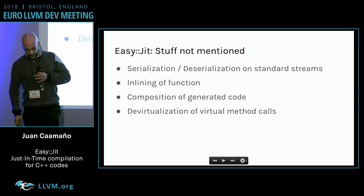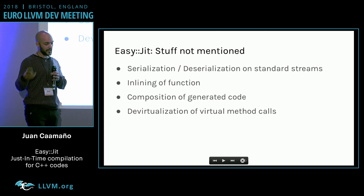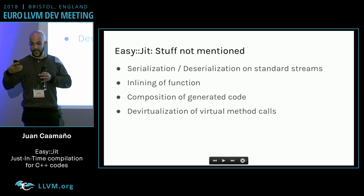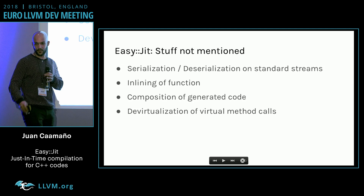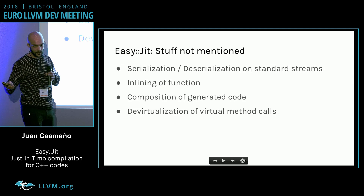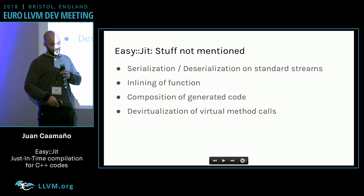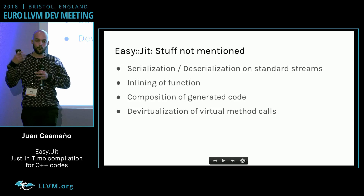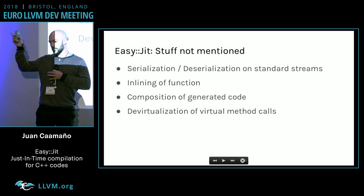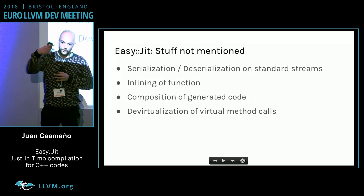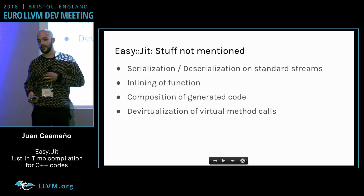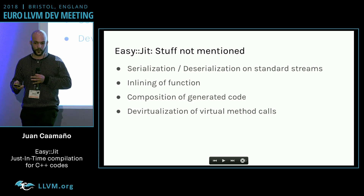There are other features I didn't mention. We have serialization and deserialization for std I/O streams — so you could serialize the bitcode on a standard stream like a socket, send it over the internet, and somebody else deserializes it on the other side (though that's probably a really bad idea). We also have support for more advanced inlining of functions, the ability to compose generated code, and special paths for devirtualization of virtual method calls.